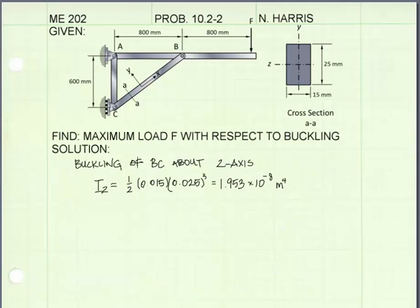Since we're looking at buckling about the Z-axis, we need to get our moment of inertia of the cross-section about the Z-axis. Our base dimension will be the dimension parallel to the neutral axis, the Z-axis, which is 15 millimeters, and our height dimension will be 25 millimeters, and it gives us the moment of inertia shown.